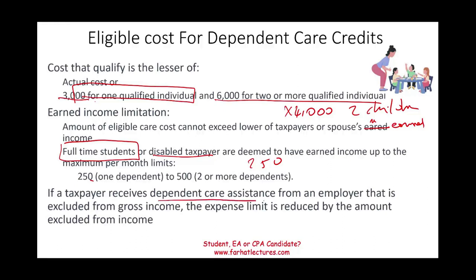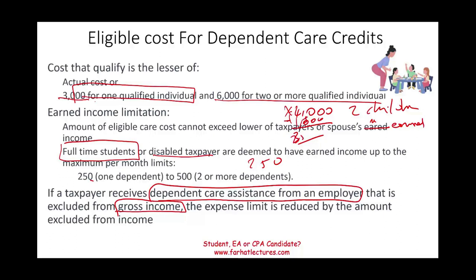If a taxpayer received dependent care assistance from an employer — meaning the company pays extra money to help care for your child and that money is excluded from gross income (pre-tax) — you must reduce your qualified expenses by that employer-provided amount. For example, if you paid $4,000 and your employer gave you $1,000 tax-free, your qualified expenses drop to $3,000. You cannot double-dip: pre-tax employer assistance must be deducted from your eligible care costs before calculating the credit.